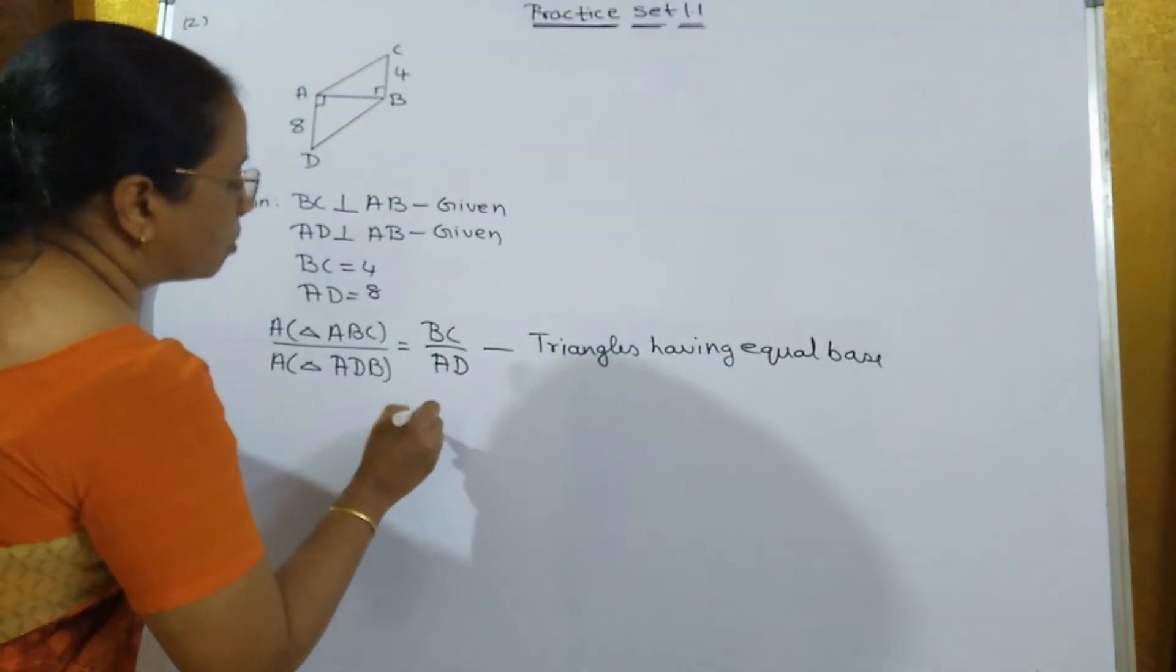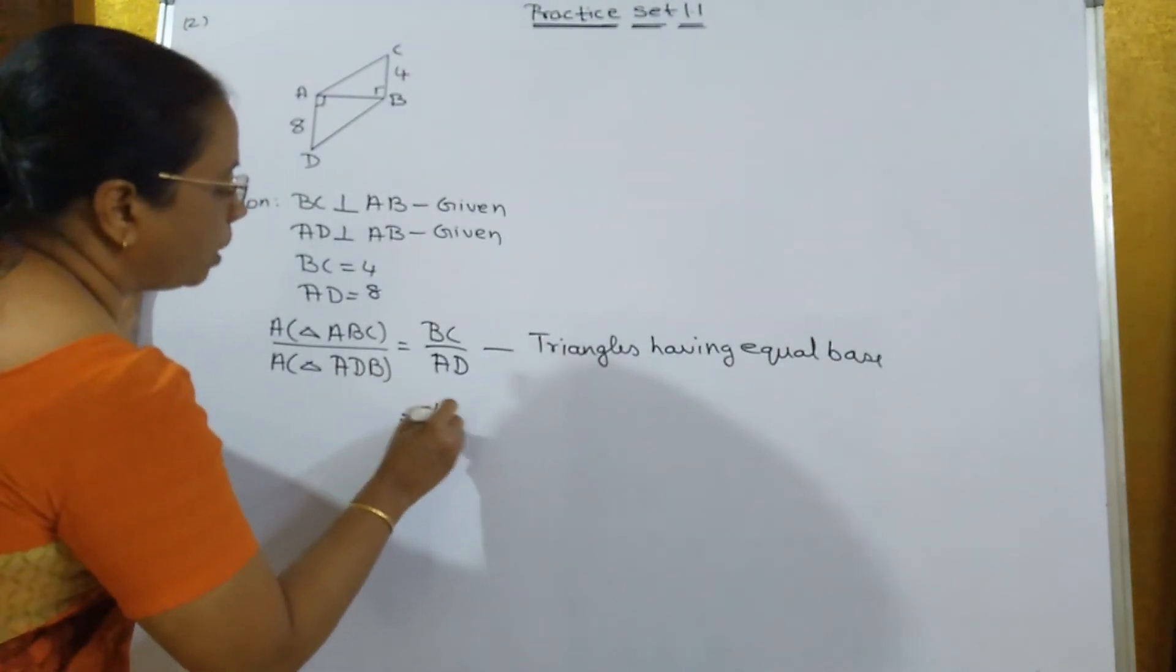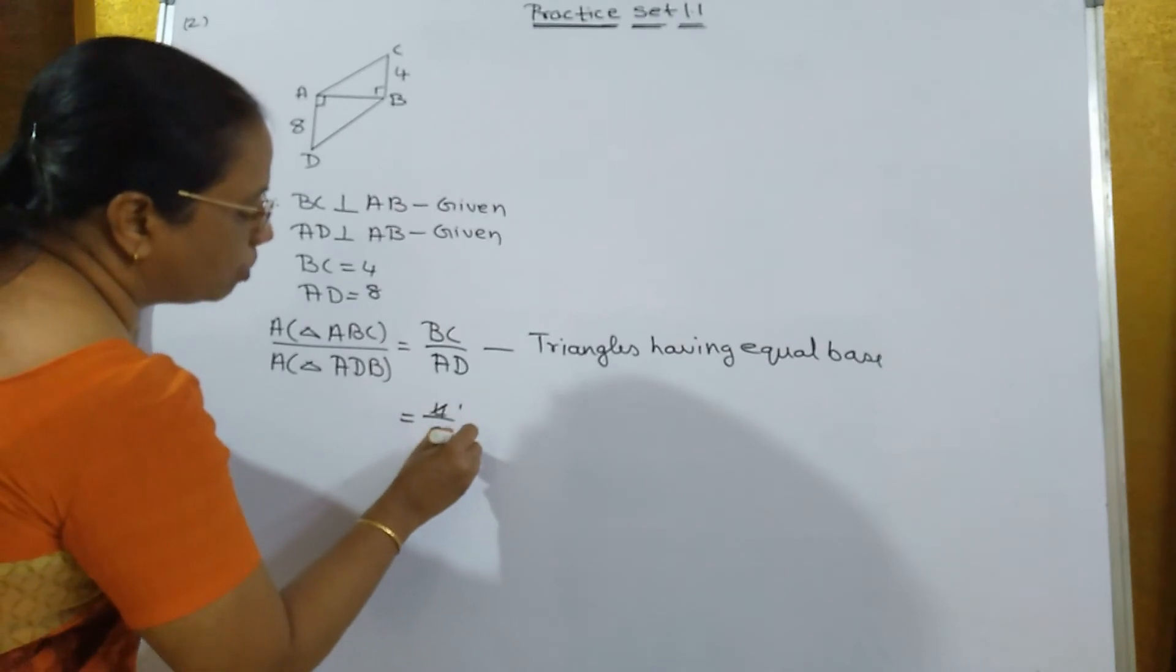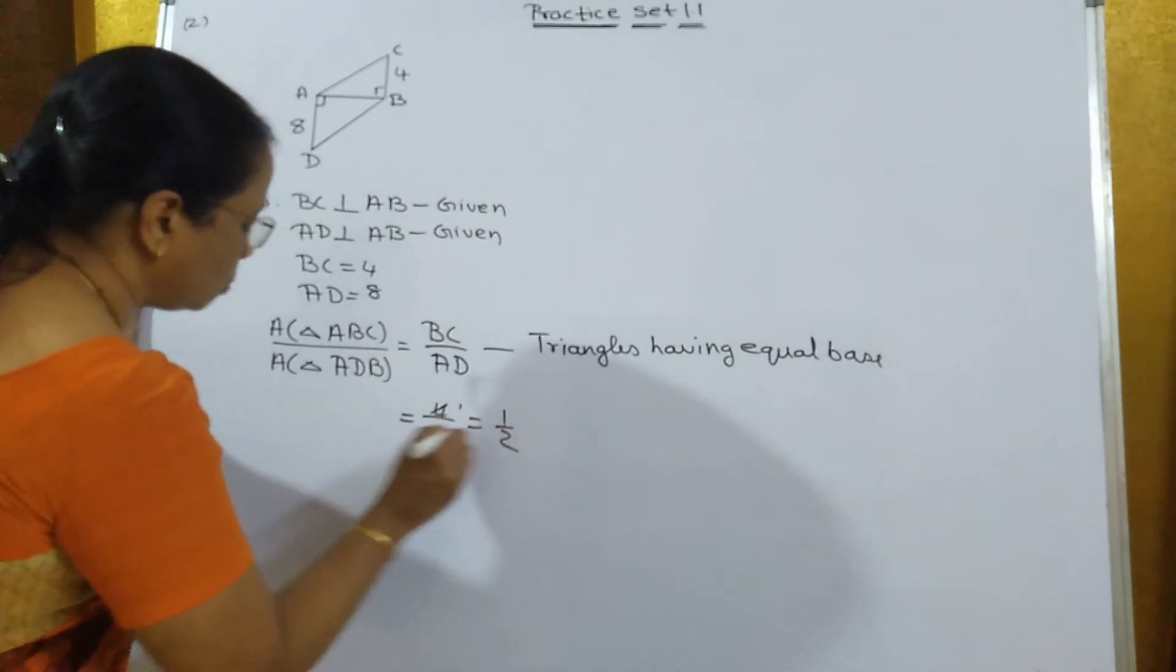So that is equal to BC is equal to how much? 4 and AD is equal to 8. If you cancel, you will get 1 upon 2.